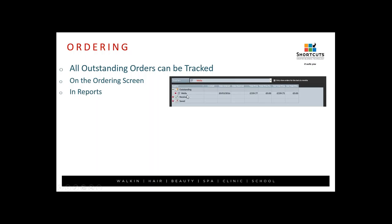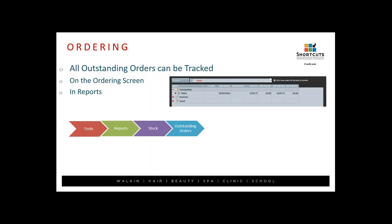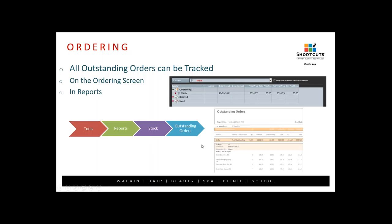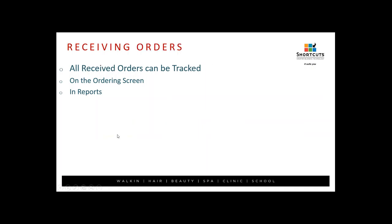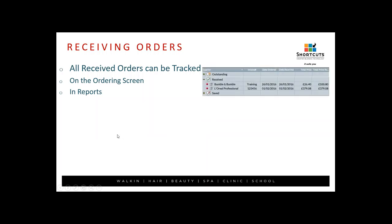All outstanding orders can be tracked in the Ordering screen under Outstanding, showing the date ordered and the price. You can also track in Reports: go to Tools, Reports, Stock, and there is an Outstanding Orders report. This gives a breakdown of all orders placed during a specified period, showing all outstanding orders you're still waiting to receive.